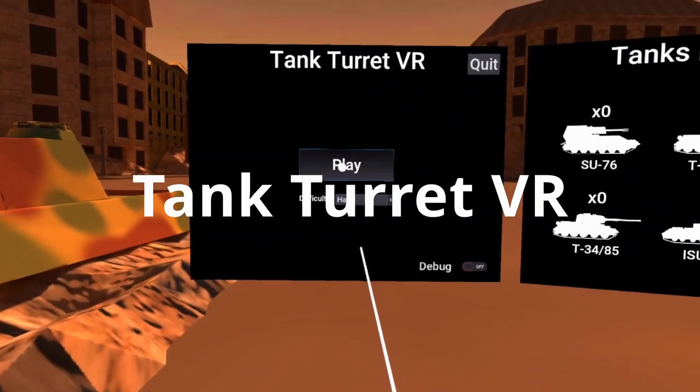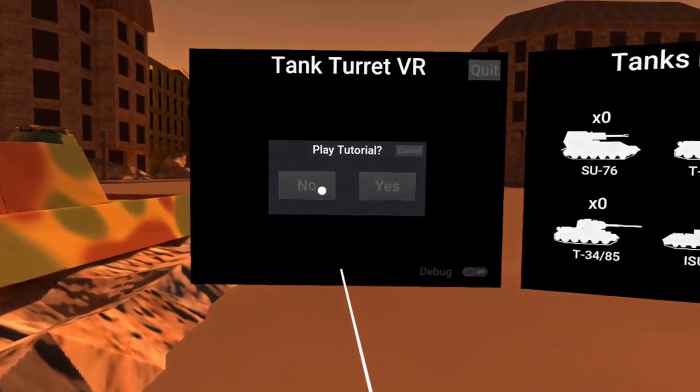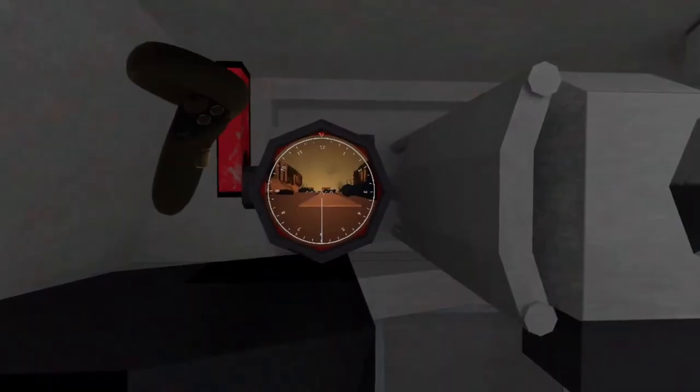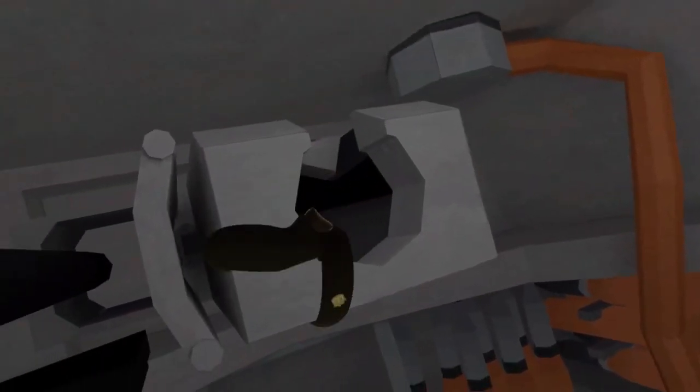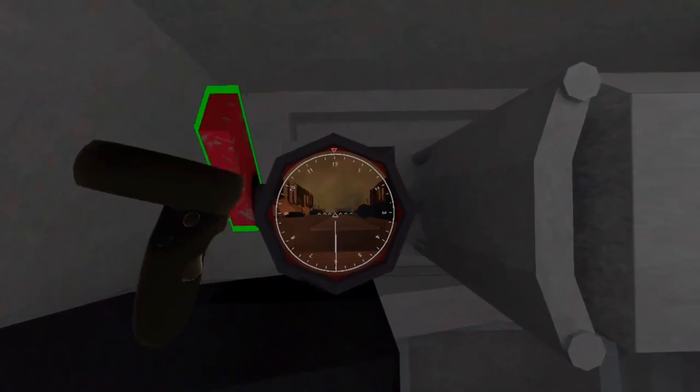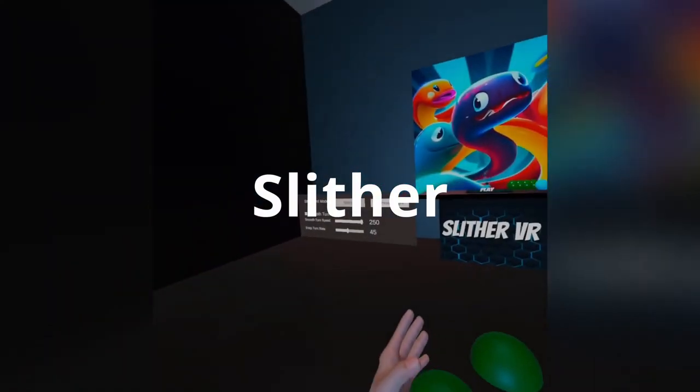Next up is Tank Turret VR, a World War 2 Panther tank simulator set in the ruins of Berlin. You are sitting in the turret of a tank and must shoot large rounds at your enemies while quickly reloading to ensure you destroy your way to victory.